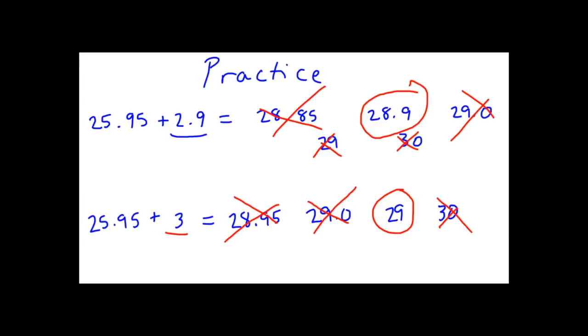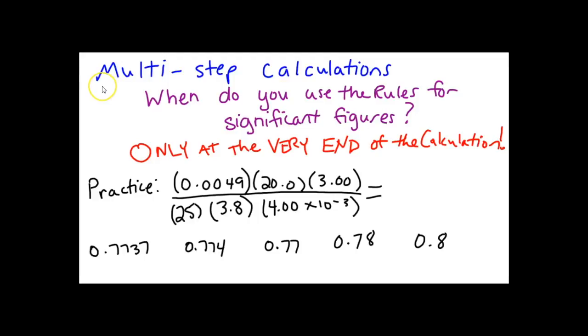I hope this has helped you understand the rule for significant figures with addition and subtraction. What I want to do now is go over how to handle significant figures when you have multi-step calculations. When do you use the rules for significant figures in multi-step calculations? Only at the very end of the calculation.